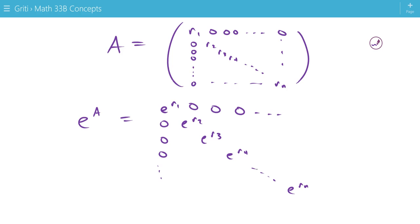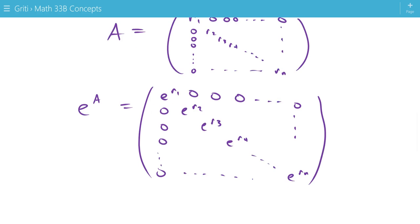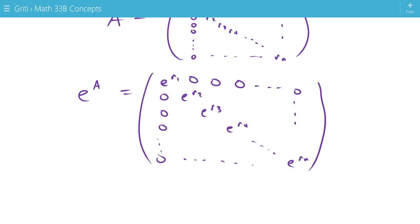So, we just need to multiply, or take each of the diagonal entries to their exponential. This only works with diagonal matrices. For other types of matrices, there is no formula, or easy formula like this, for e to the a.